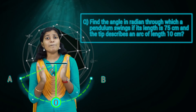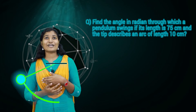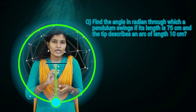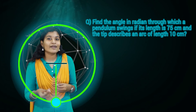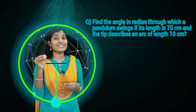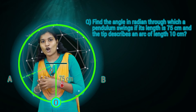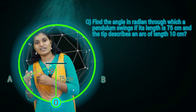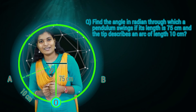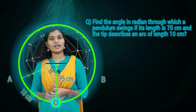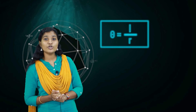If you continue an oscillation, the pendulum can complete a revolution and describe a circle. The radius is the length of the pendulum: 75 cm. The arc described is 10 cm. What is the angle theta subtended? We have the basic equation theta = L/R, where L is the arc length and R is the radius.